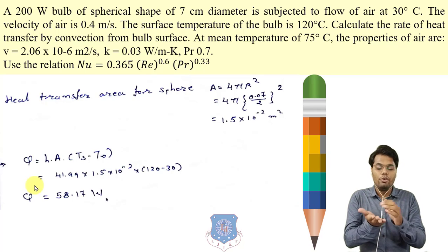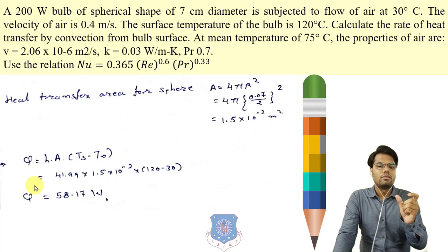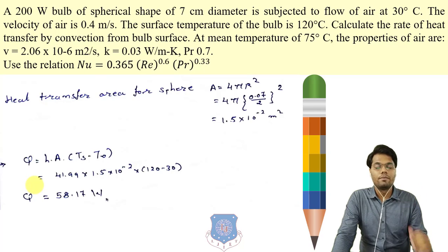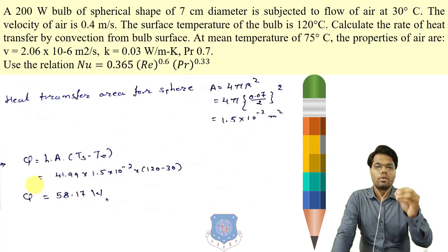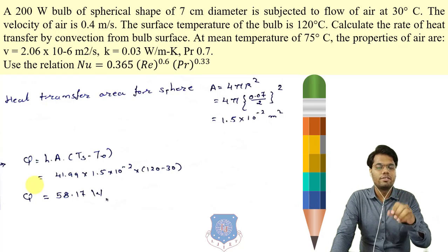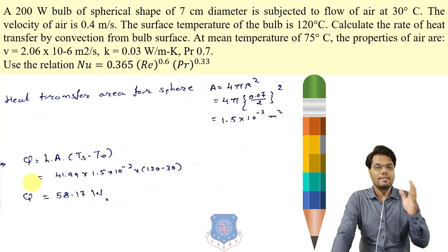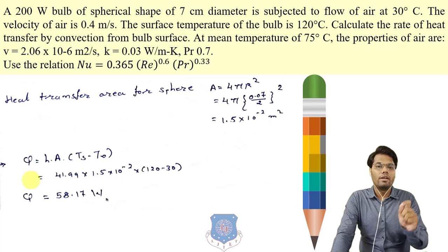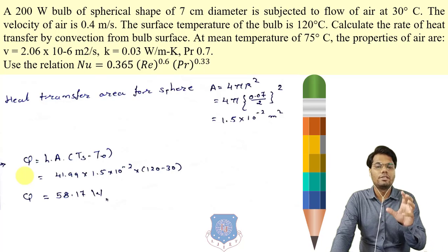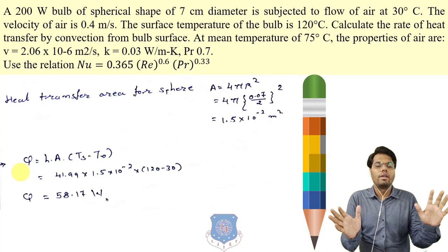This is how we solve numericals based on forced convection. There must be a given relation between Nusselt, Prandtl, and Reynolds numbers. The final goal is always to find the convective heat transfer rate using Q = hA·ΔT. Area is calculated from the geometry given, Ts and T∞ are given in the question, and the first step is to find h using the Nusselt-Reynolds-Prandtl relation.